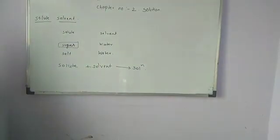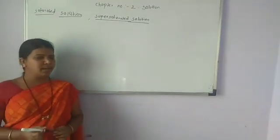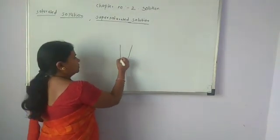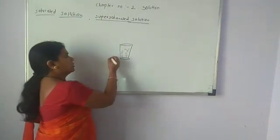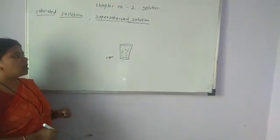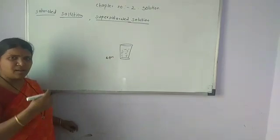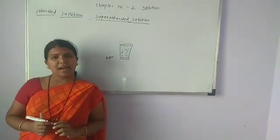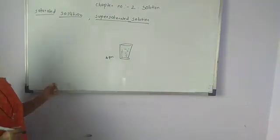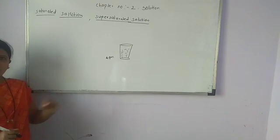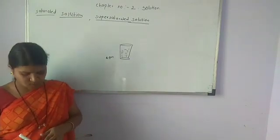Next: saturated solutions and supersaturated solutions. If we take a glass of water and keep adding sugar — 2 grams, then again 2 grams, again 2 grams — a point comes where the water stops dissolving the sugar. At that point, it becomes a saturated solution. Water has ended its capacity to dissolve the solute. That is called a saturated solution.